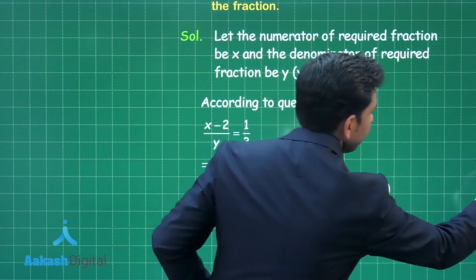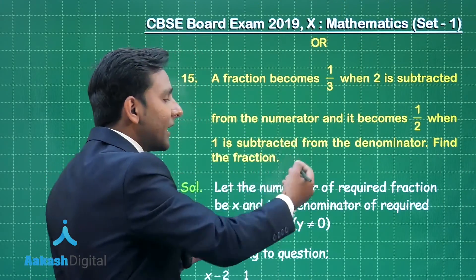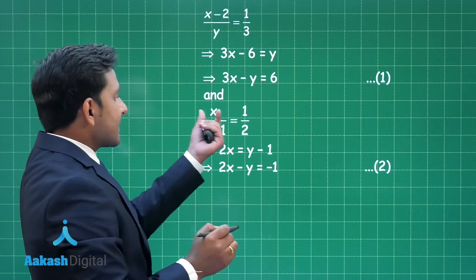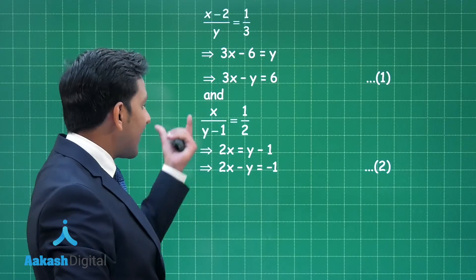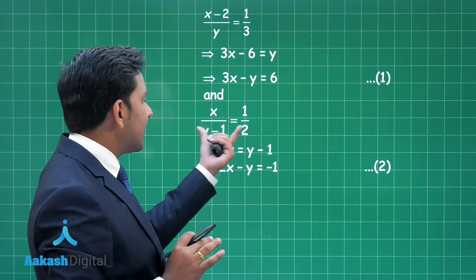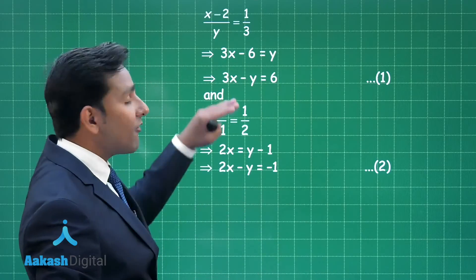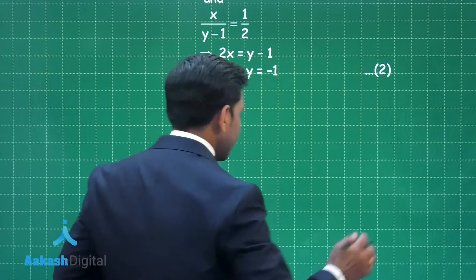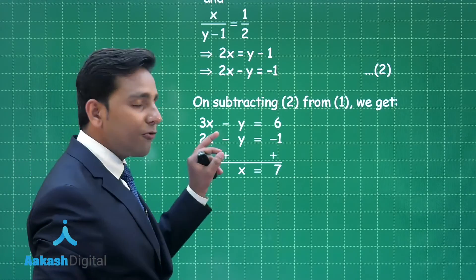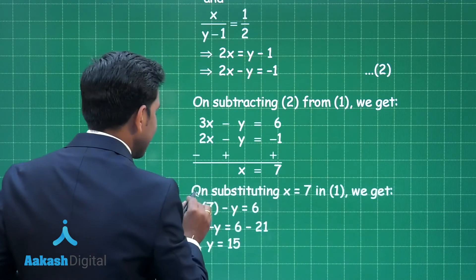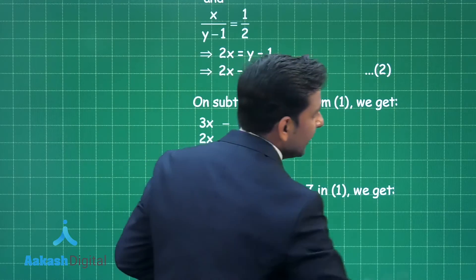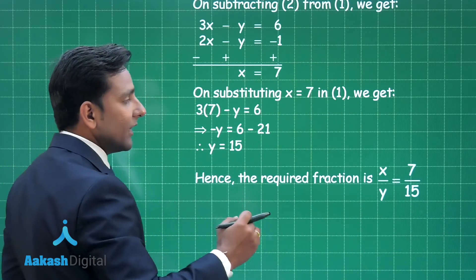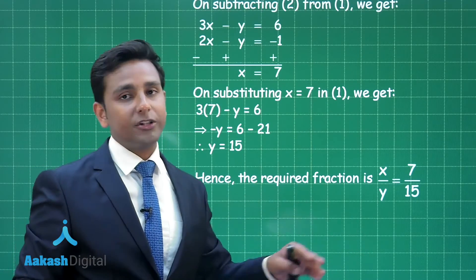The second condition — it becomes 1/2 when 1 is subtracted from the denominator — gives: x/(y − 1) = 1/2, which simplifies to the linear equation 2x − y = −1. Solving these 2 equations using elimination method gives x = 7, and substituting into equation 1 gives y = 15. Therefore the required fraction is x/y = 7/15.